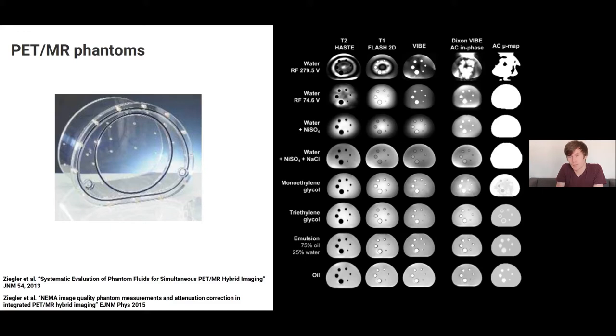The artifacts can be mitigated by doping the water. For example, a bit of nickel sulfate can be added to reduce T1 time and a bit of sodium chloride, so salt, can be added to increase the conductivity of the water, which also reduces the artifacts. So from a practical point of view, if you observe a lot of artifacts in your PET phantoms when you acquire PET-MR data, adding a bit of salt usually helps to mitigate those problems.